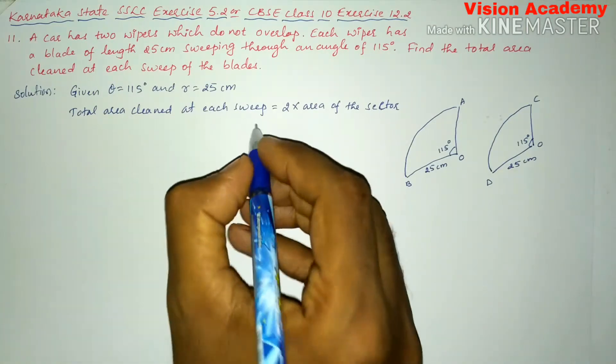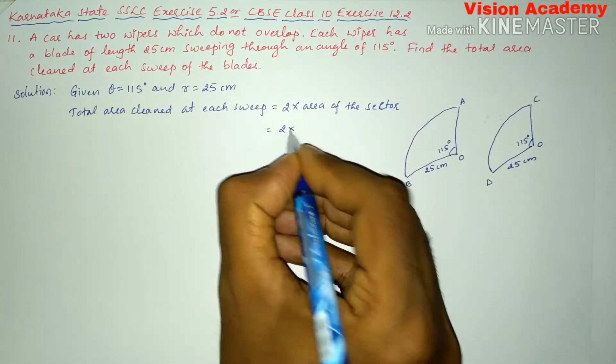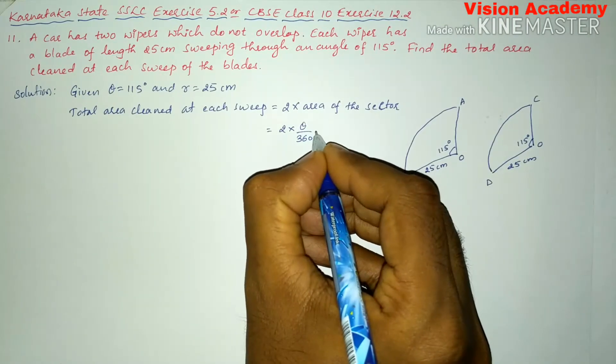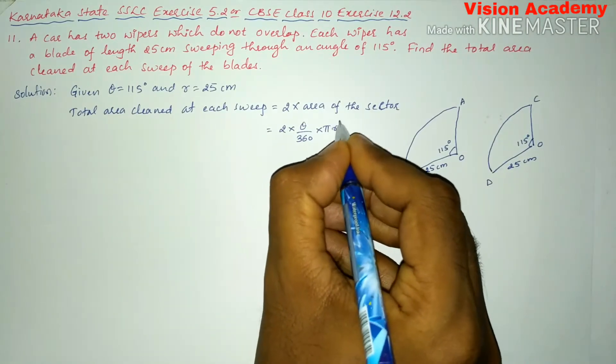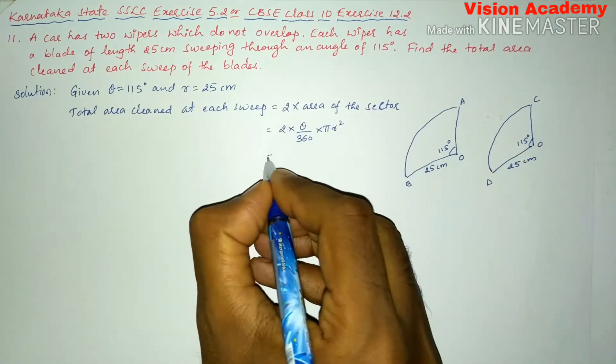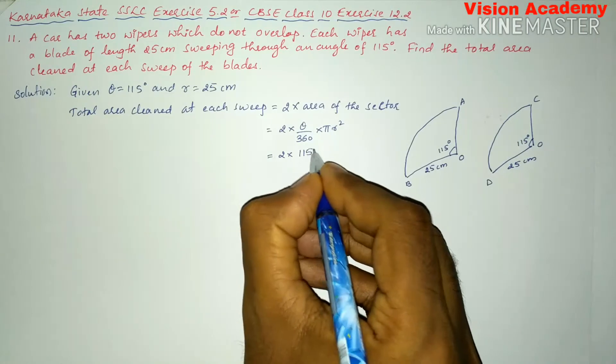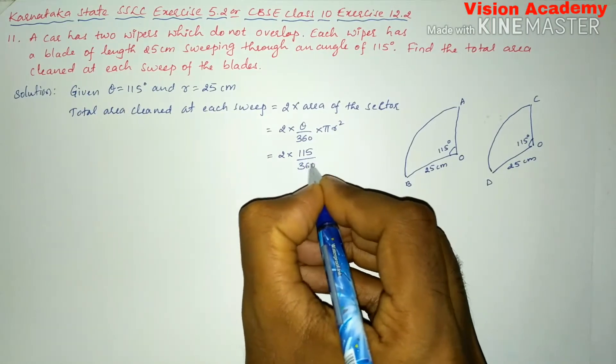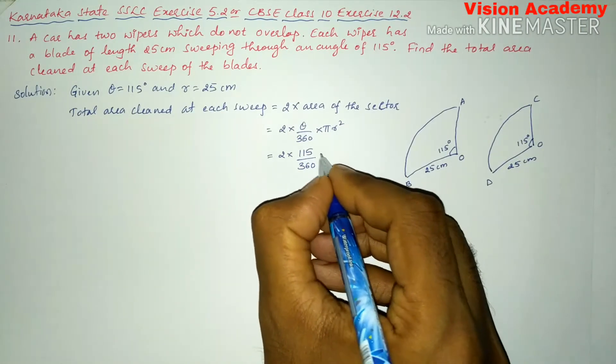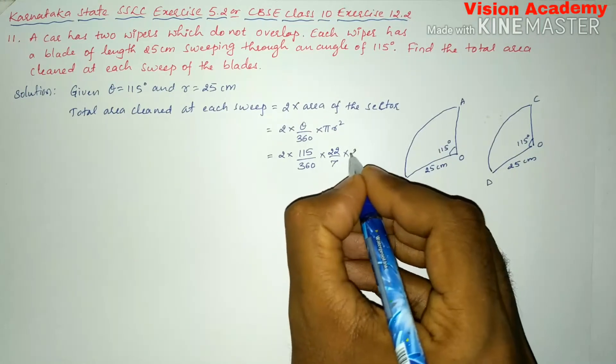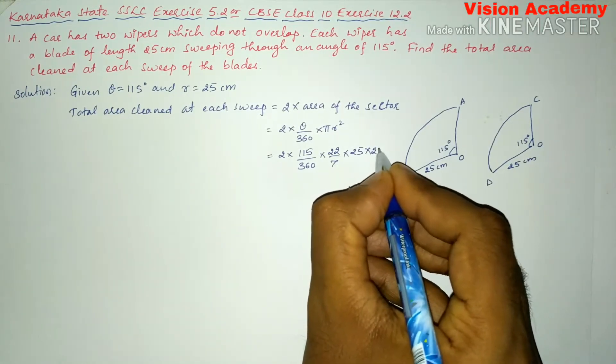So here we will write 2 into area of sector is theta divided by 360 degrees into pi r square. Now let us substitute: 2 into theta is 115 divided by 360 into pi is 22 divided by 7 and r is 25 into 25.